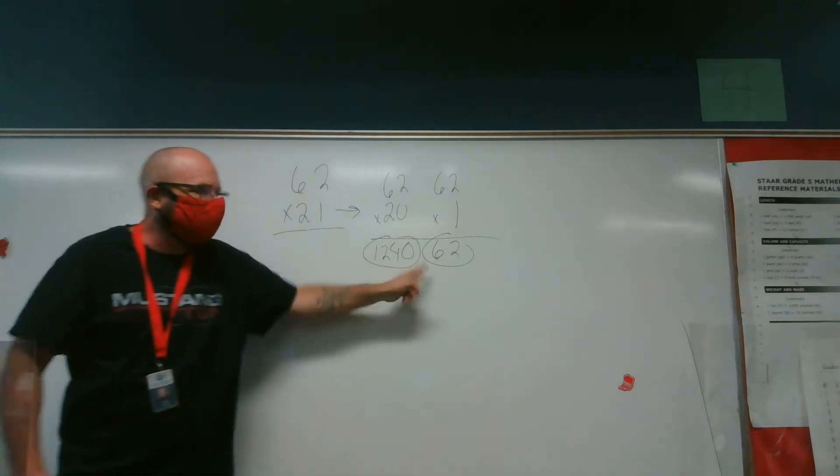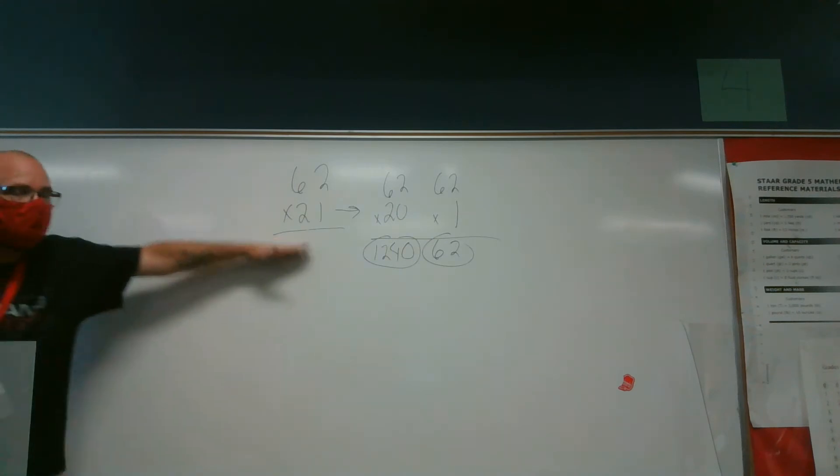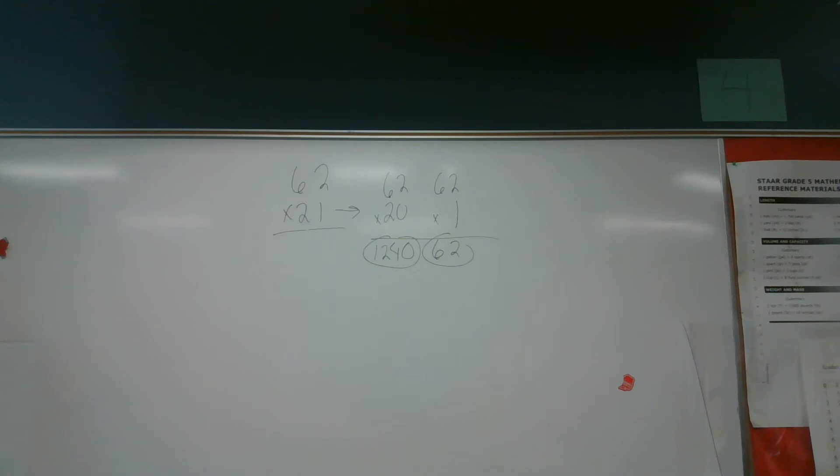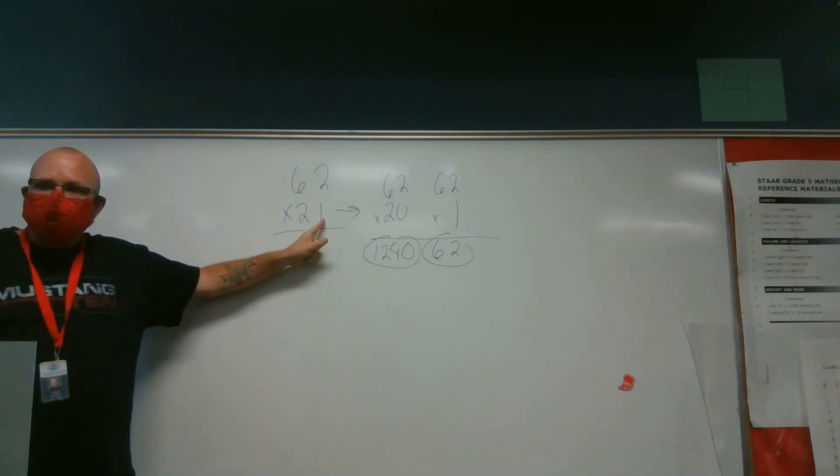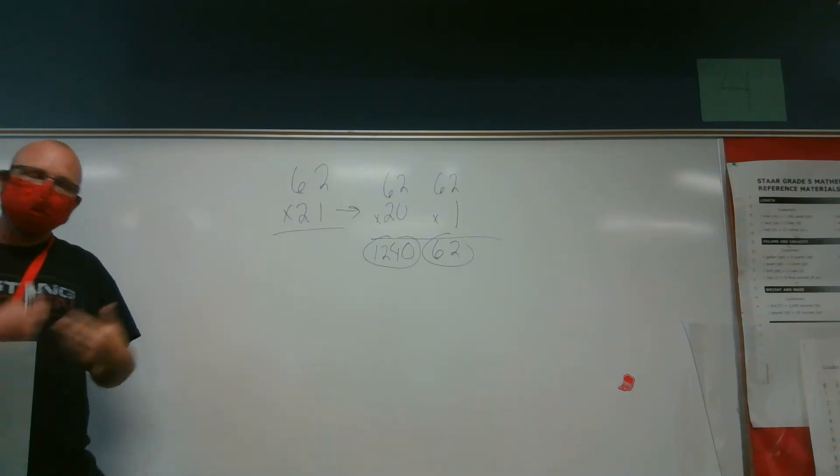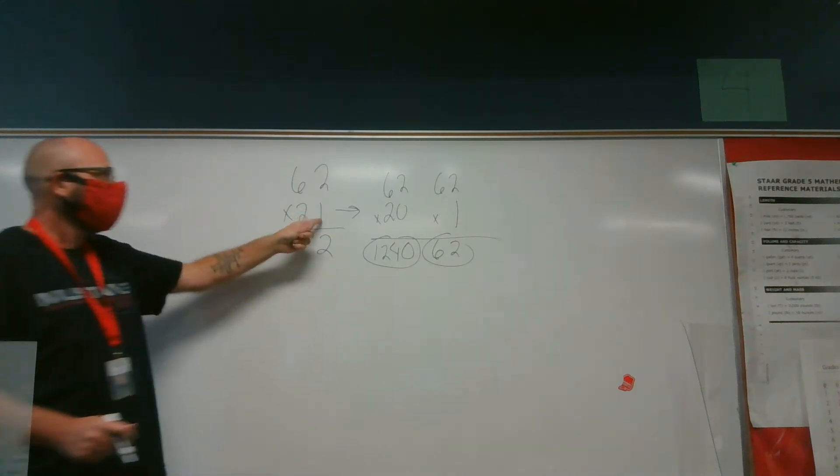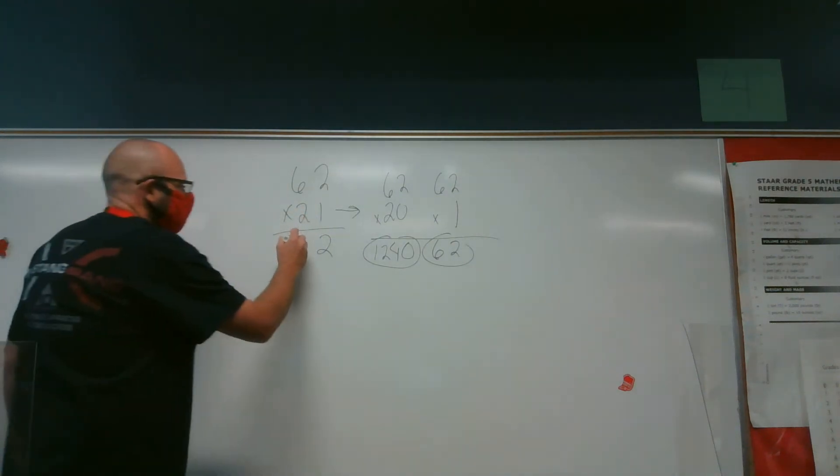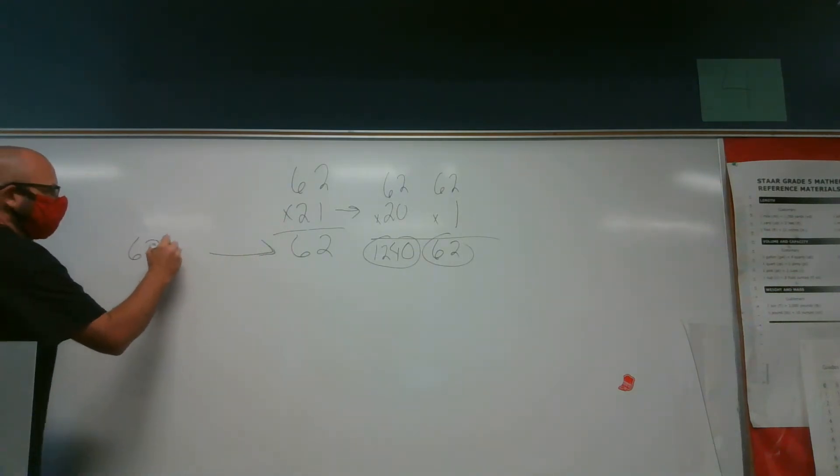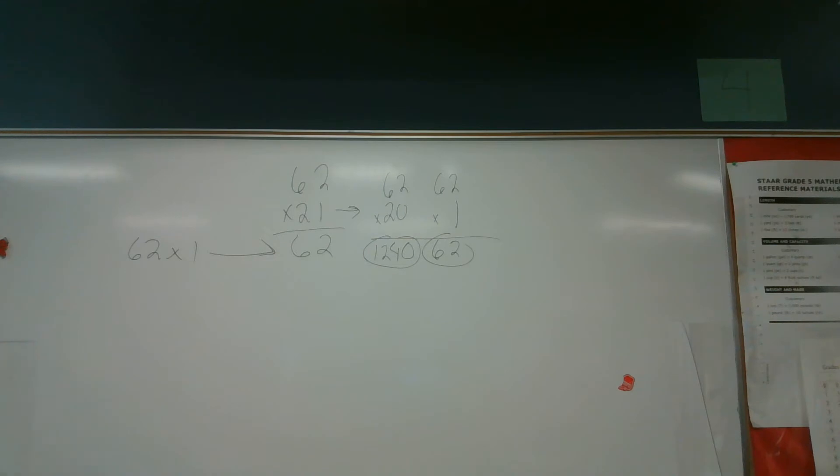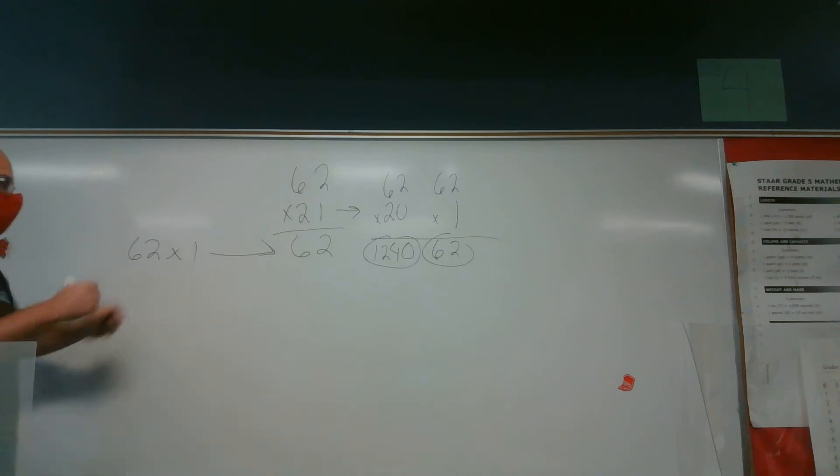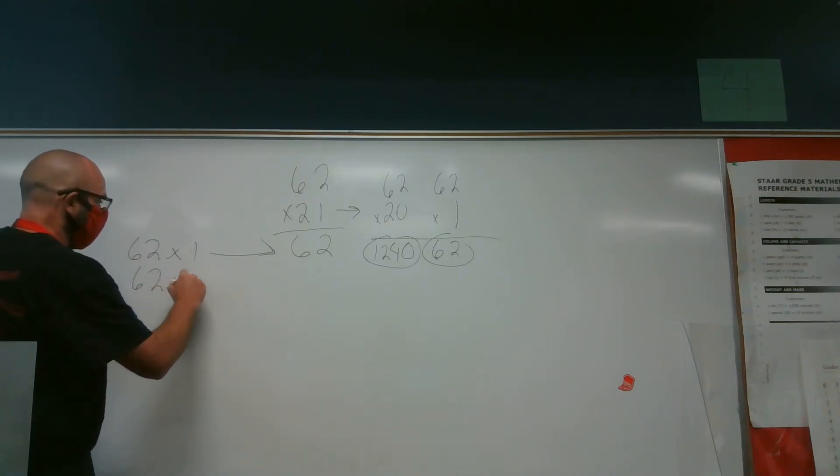These two numbers right here, these two products are going to appear in this group right here when we do the standard algorithm. I start in my ones place. I have 1 times 2, which is 2. I have 1 times 6, which is 6. So this right here was 62 times 1. That's what this did. What I just did was 62 times 1.